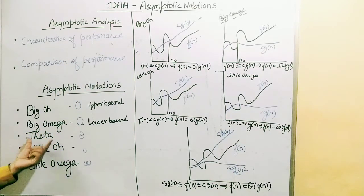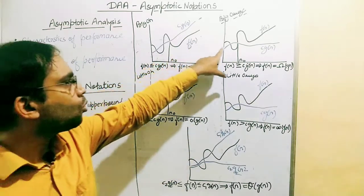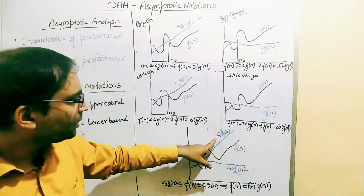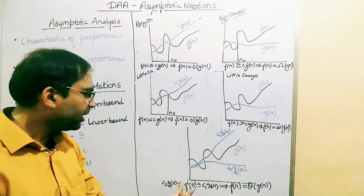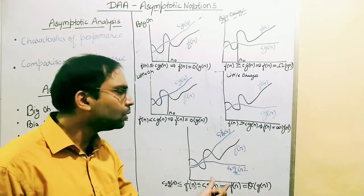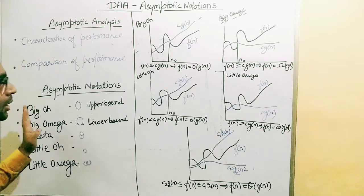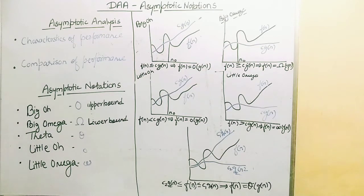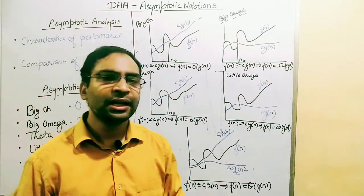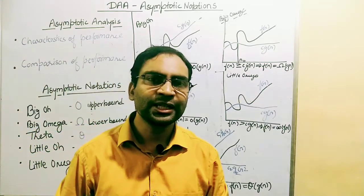The fifth notation is Theta, which always gives us the average case complexity analysis. Theta is a combination of Big O and Big Omega, because the function gives us both bounds: an upper bound and a lower bound. Mathematically, f(n) is always greater than or equal to its lower bound c2·g(n), and always less than or equal to its upper bound c1·g(n). So Theta gives us the idea of average case complexity. These are all five asymptotic notations, very important for examinations. In the next coming lectures, we will understand how to analyze algorithm performance using these notations.